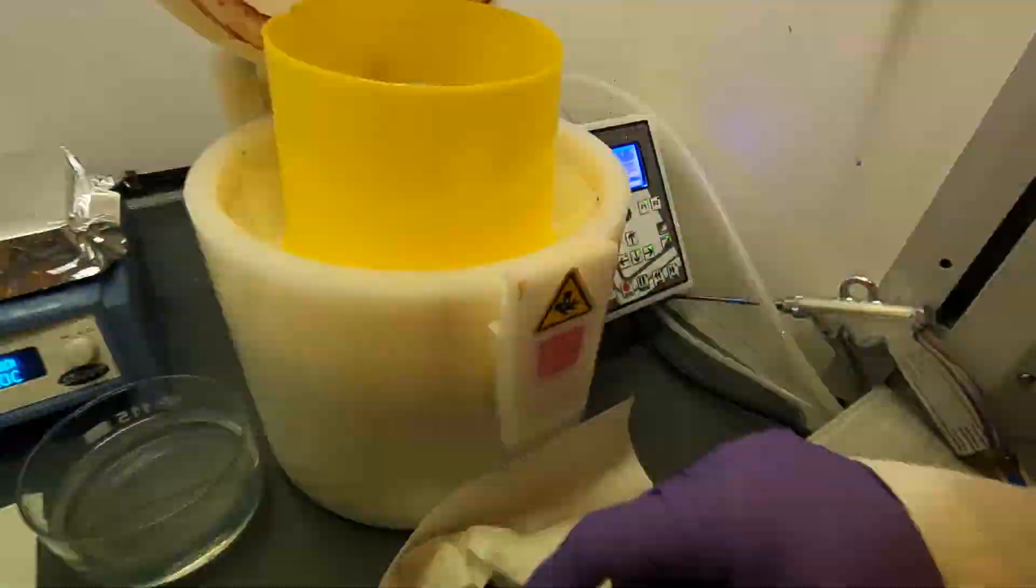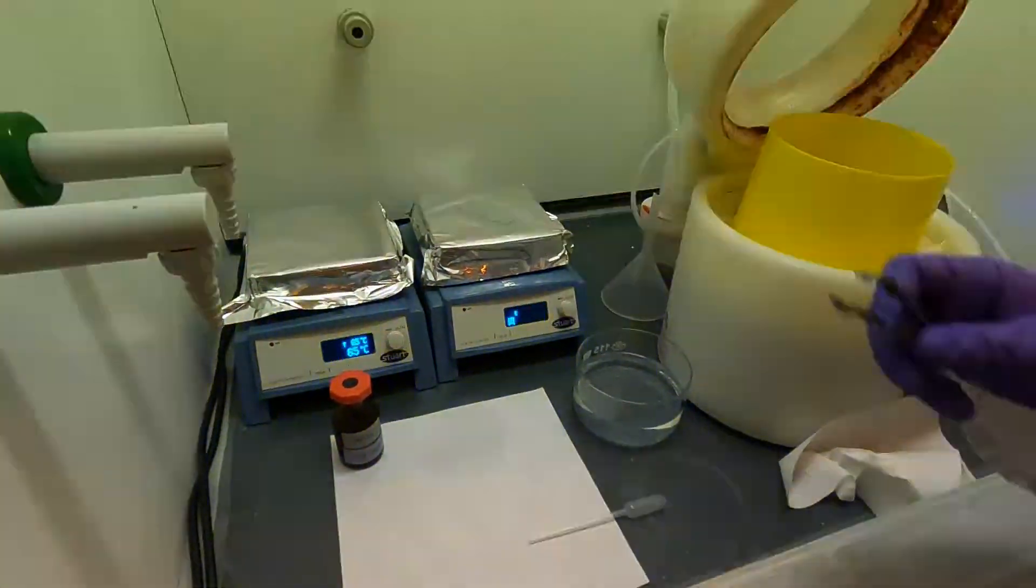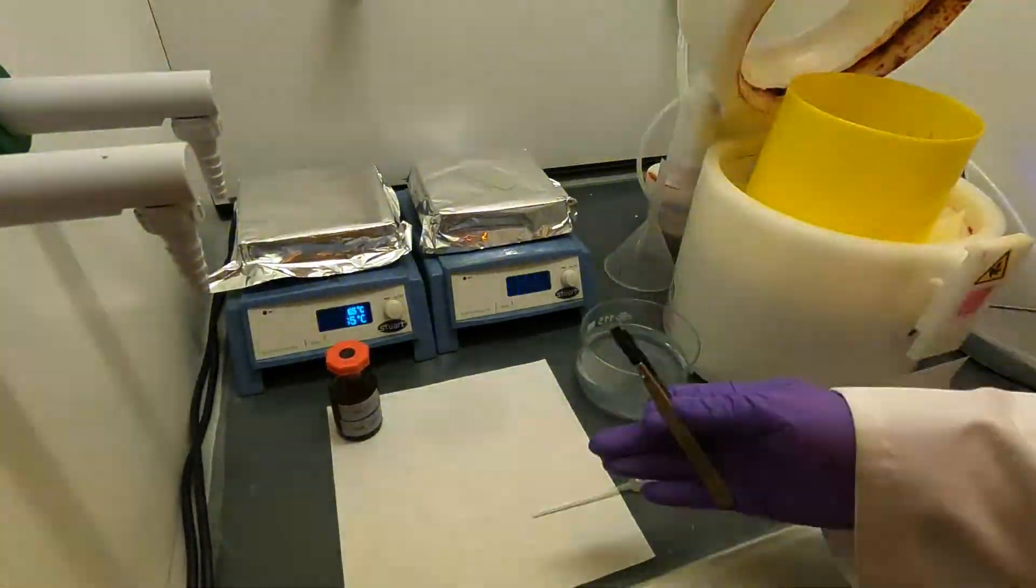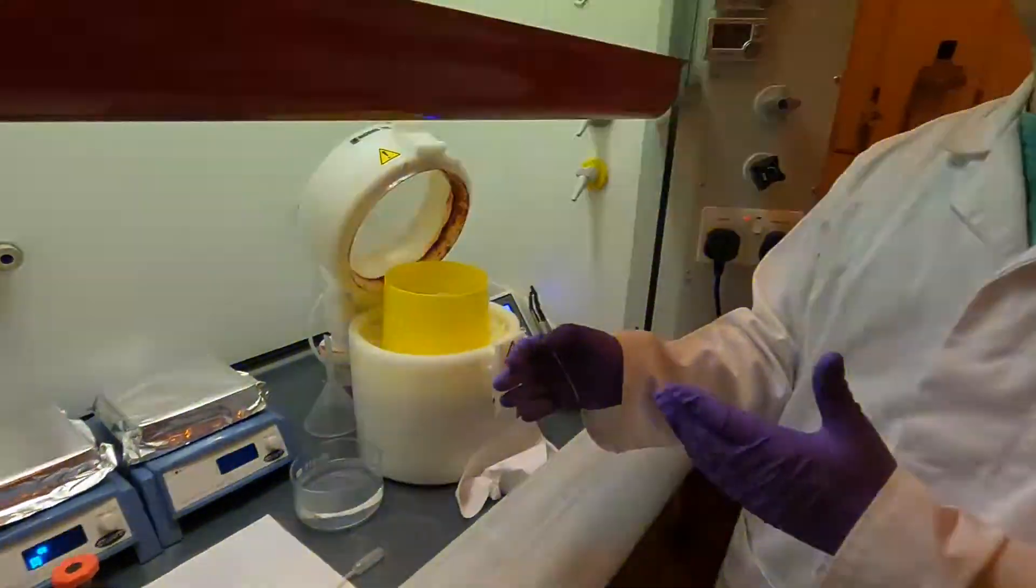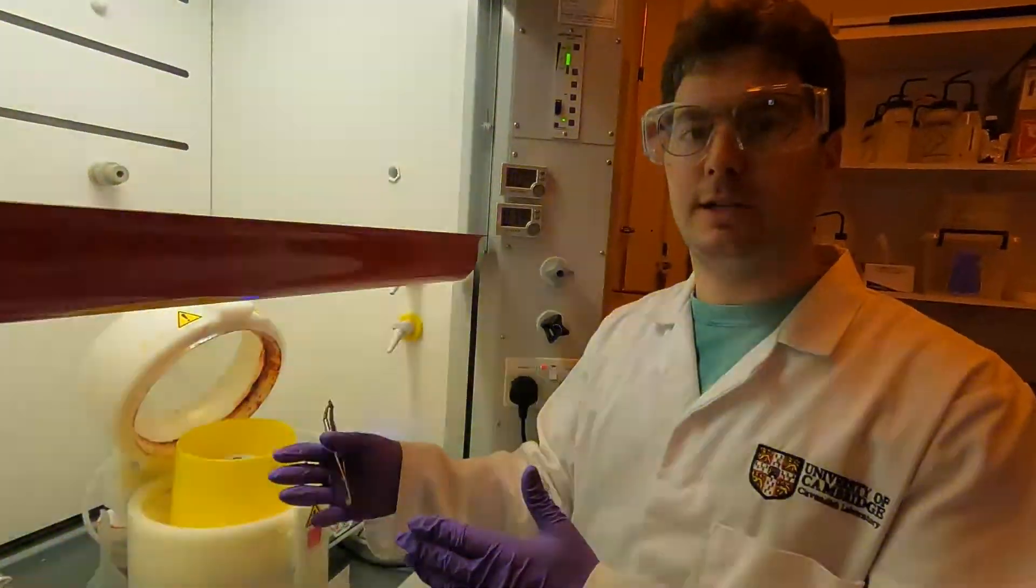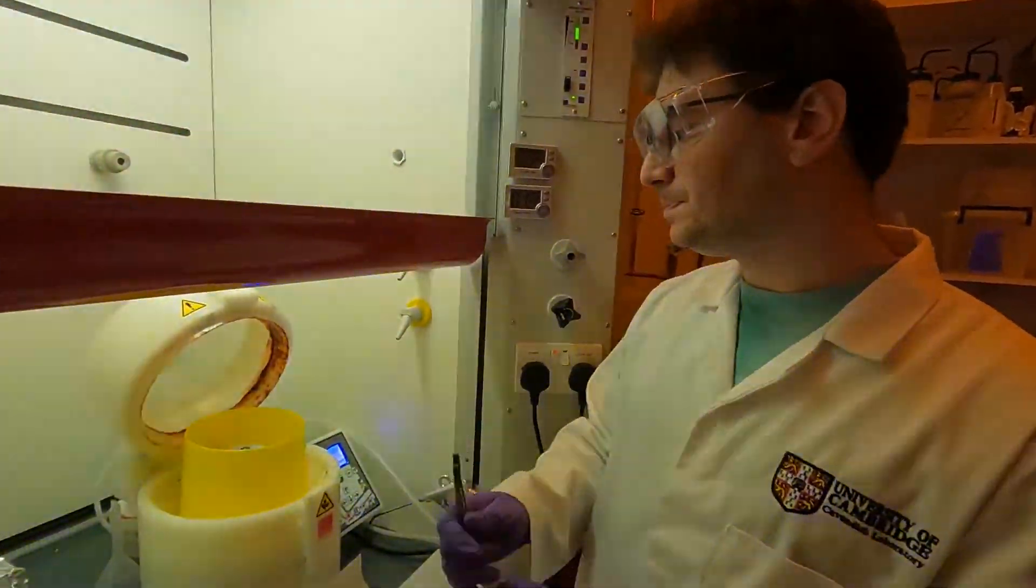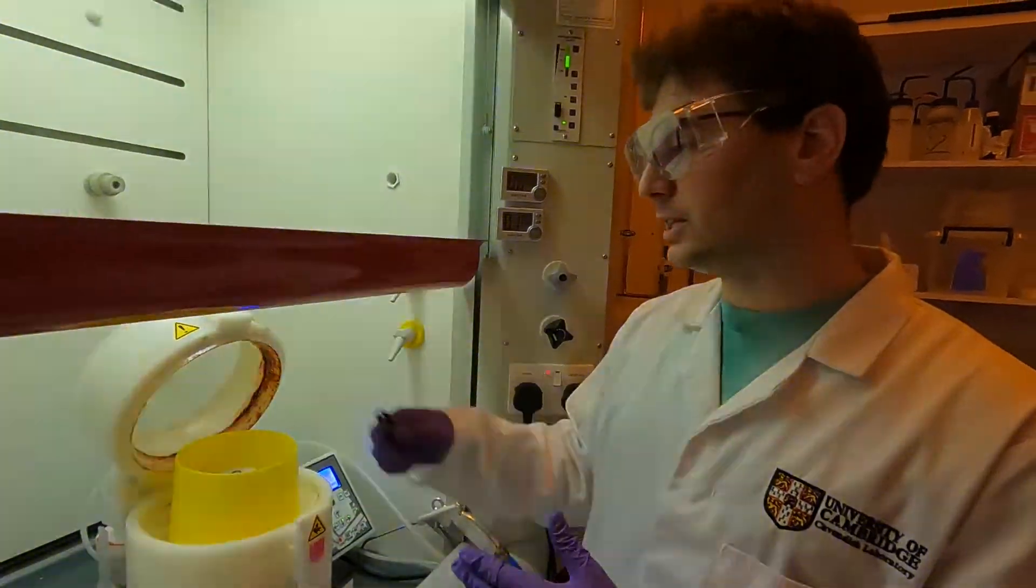The next step will be to quickly get the sample off the hot plate and leave it to cool down. We want it to cool down for about 90 seconds, this will get the sample from 200 degrees to approximately room temperature, and then we'll be able to put it in the spin coater.